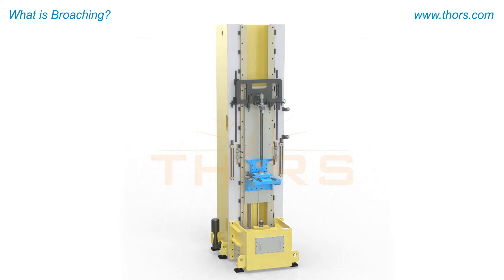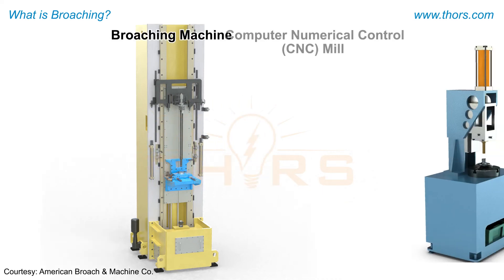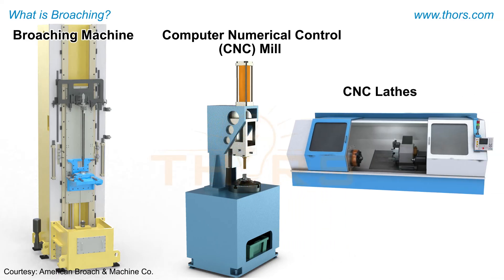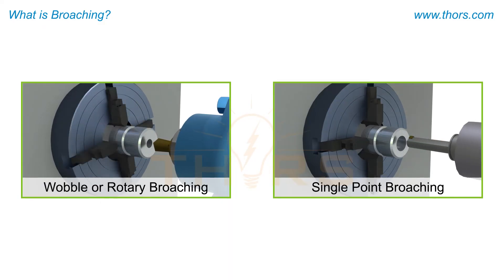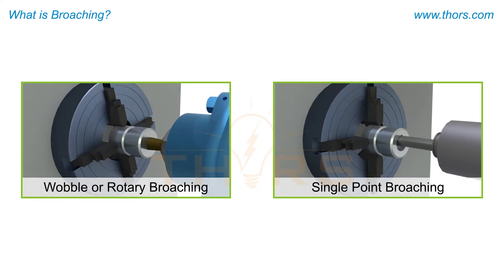The broaching processes are typically done on a broaching machine. Computer numerical control, or CNC, mills and CNC lathes can also be used for broaching with wobble or rotary and single point broaches.